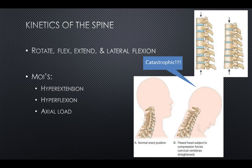The motions available in the spine are rotation, flexion, extension, and lateral flexion, or side bending. Common mechanisms of injury for the spine are hyperextension, where the spine is forced backwards; hyperflexion, where the spine is forced forward; and axial loading, which is a sudden excessive compression that drives the weight of the body against the head.